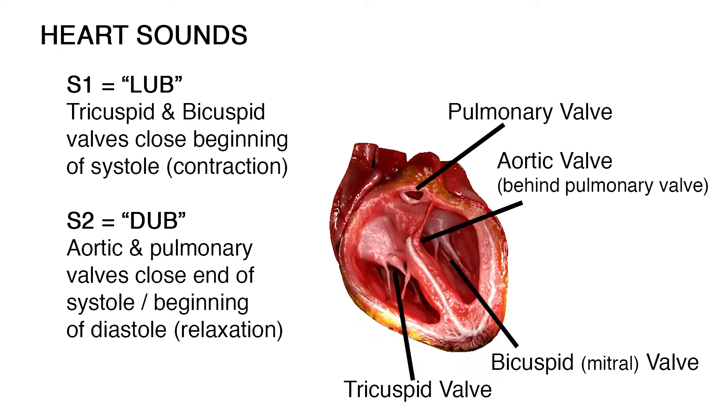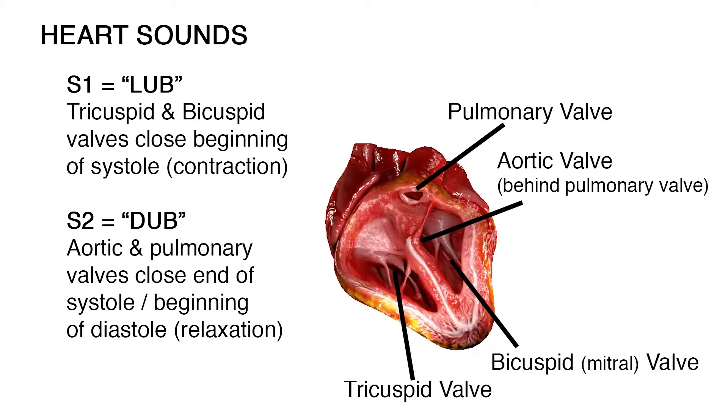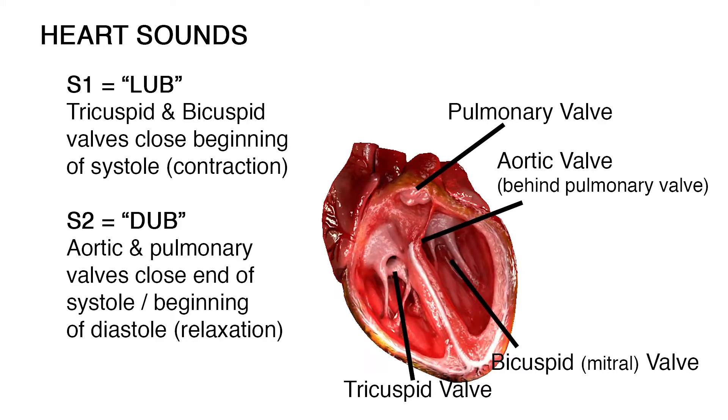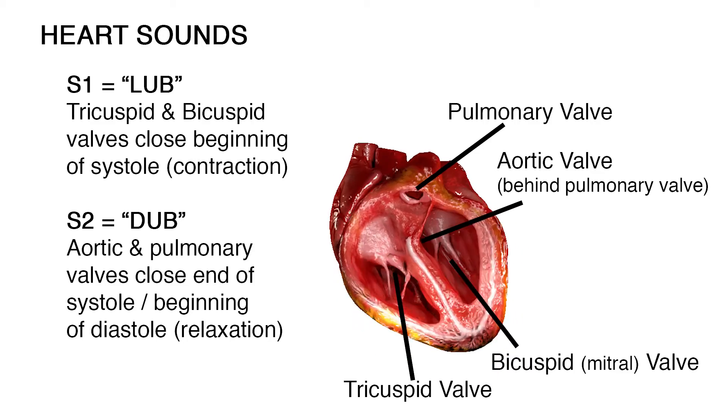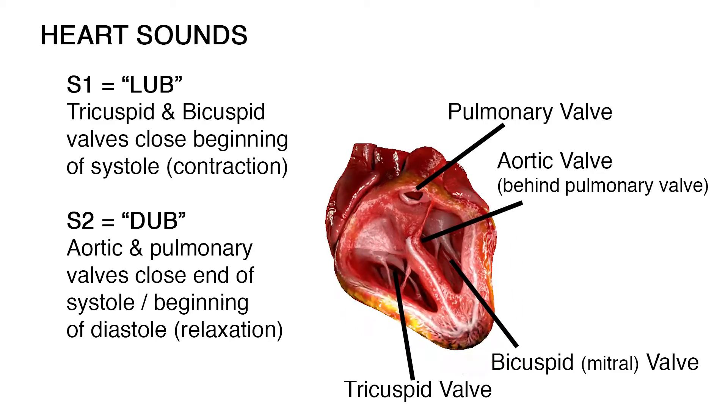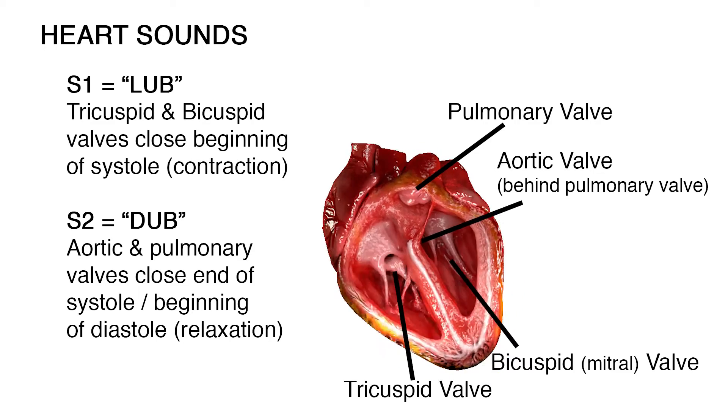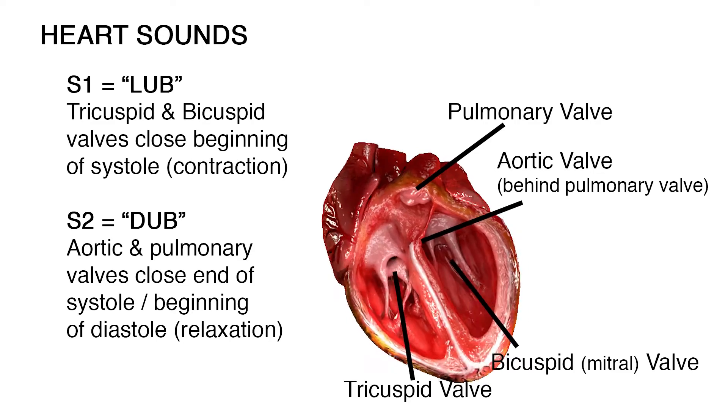As the ventricles contract, blood is pumped through the pulmonary valve, leading to the lungs, and the aortic valve, leading to the aorta and the rest of the body.